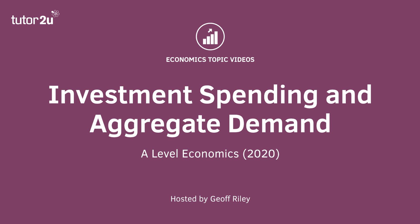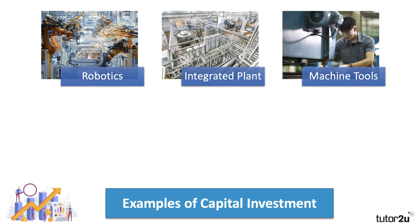Welcome back. In this video we're going to take a few minutes to think about another component of demand. A key aspect of demand for goods and services is the level of investment spending in the economy. Examples of capital investment — capital expenditure — include spending on machinery and equipment.